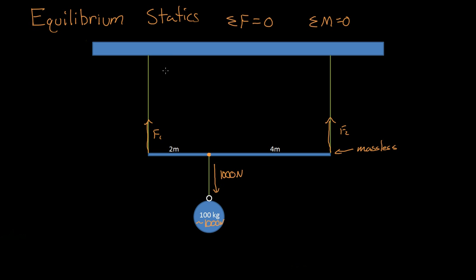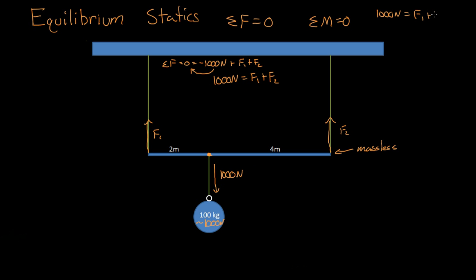So for the summation of the forces, adding all the forces together which must equal zero: we have negative one thousand newtons going down, plus force one, plus force two, and that must equal zero. Rearranging, we see that force one plus force two equals one thousand newtons. This doesn't tell us what force one or force two individually is — only what their sum is.